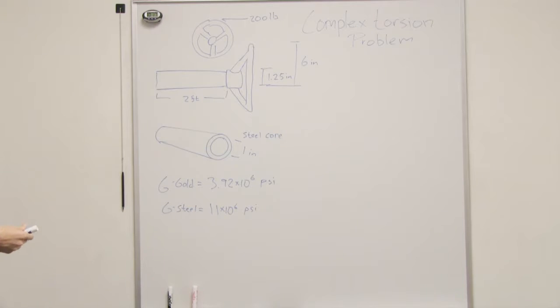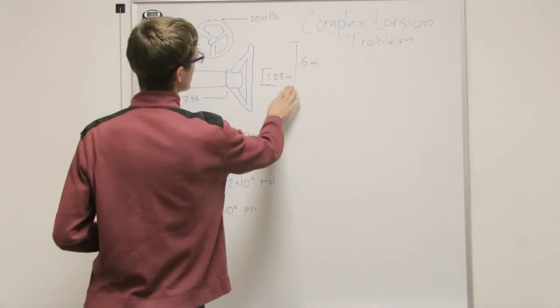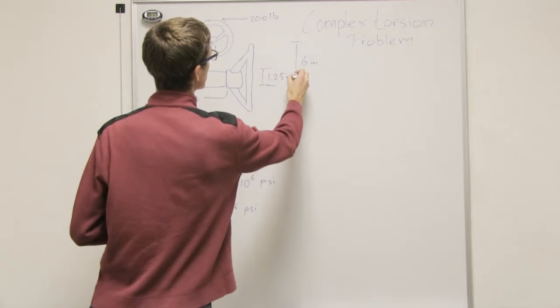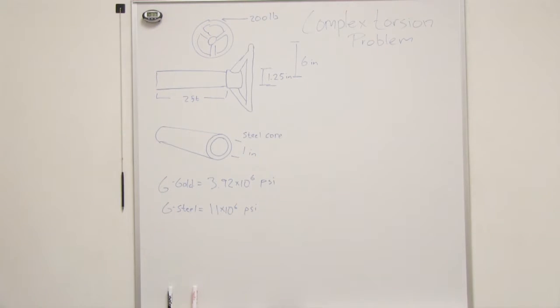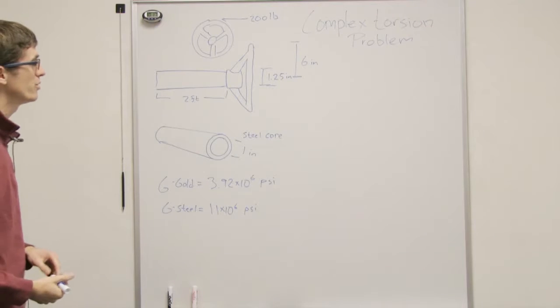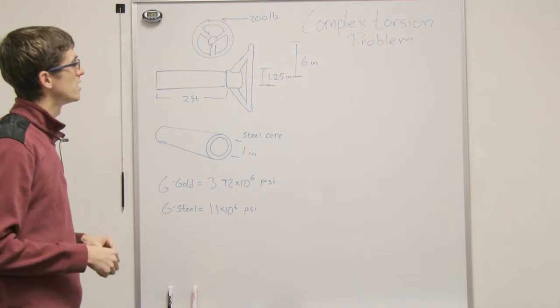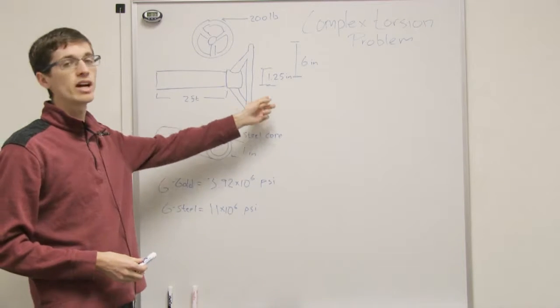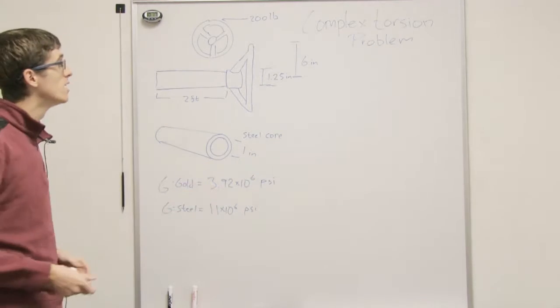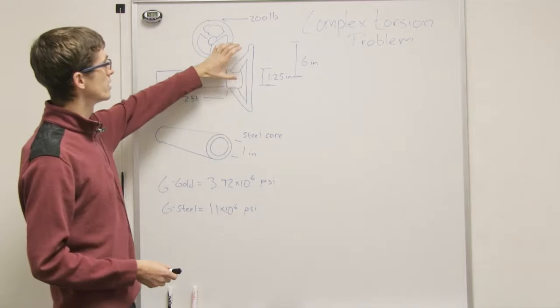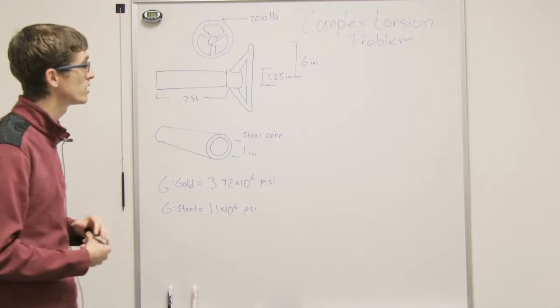So what we're doing is the design that we came up with, and I should change that's not accurate, there we go. So we've made this rod, and it's two feet long we'll say, it's 1.25 inches in diameter, and we're going to make the steel core inside one inch. And the radius of the steering wheel is 6 inches.